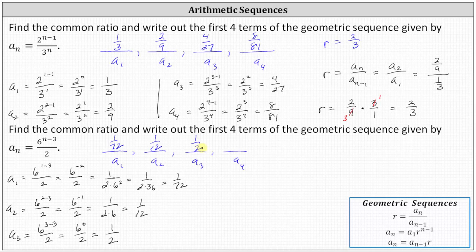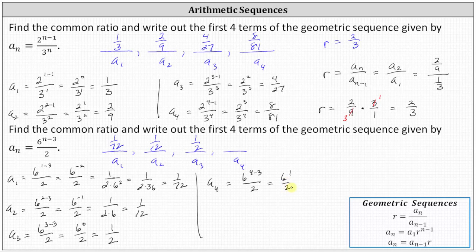Finally, for a sub four, n equals four. A sub four equals six to the power of four minus three, all divided by two, giving us six to the first divided by two, which is six divided by two, which equals three. So a sub four equals three.